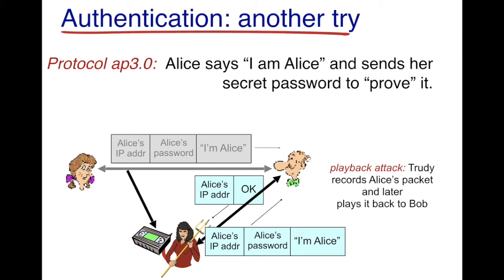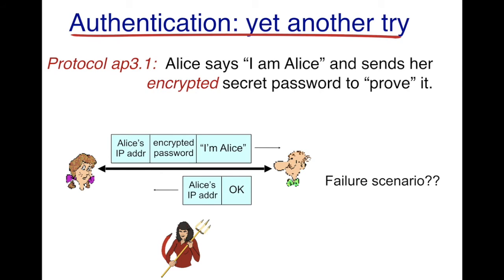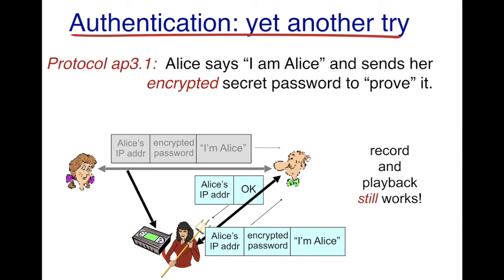Now, what if Alice encrypts her password before sending it to Bob? Even if Trudy receives this message, she would not be able to understand the password. But is there still a failure scenario? The failure scenario is exactly the same — Trudy could record the encrypted message in transit and later play it back to Bob. This would once again work. So even if you encrypt your password and send it, the playback attack would still work.